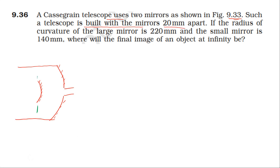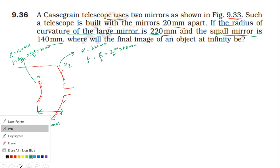The radius of curvature of the larger mirror is 220 millimeters, so the focal length is radius of curvature divided by 2, which is 220 divided by 2, giving us 110 millimeters. The smaller mirror has a radius of curvature of 140 millimeters, so the focal length is 140 divided by 2, which is 70 millimeters. The first mirror focal length is 70 millimeters and the second mirror focal length is 110 millimeters.